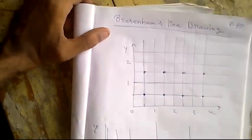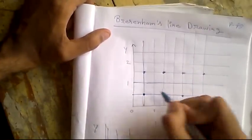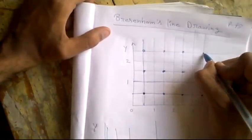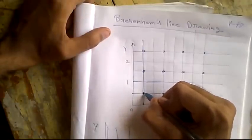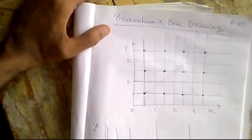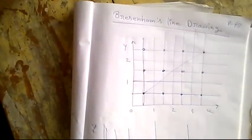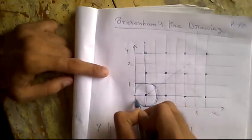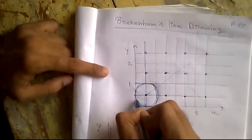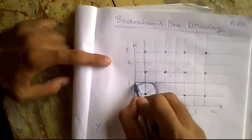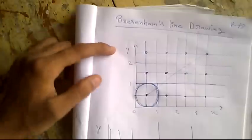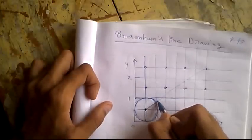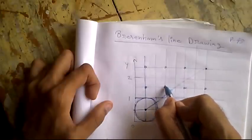Suppose we want to draw a line from this pixel to this pixel. I have drawn a line from this pixel to this pixel, and suppose this box is selected. We have to plot this box. And the question is: what will be the next box that we have to plot? You can see the line passes through this box and also this box.